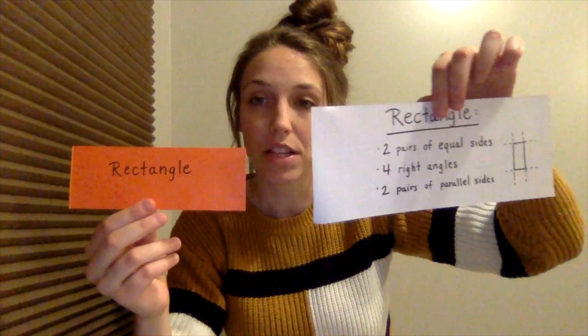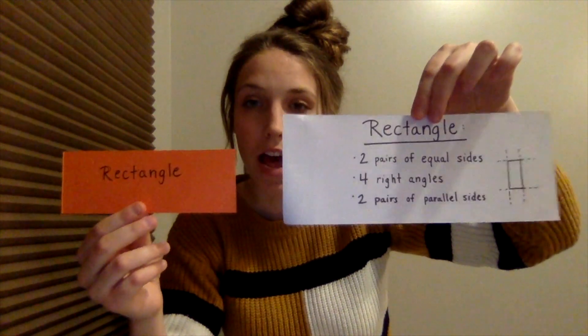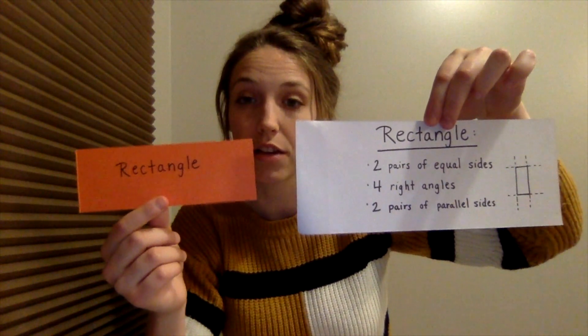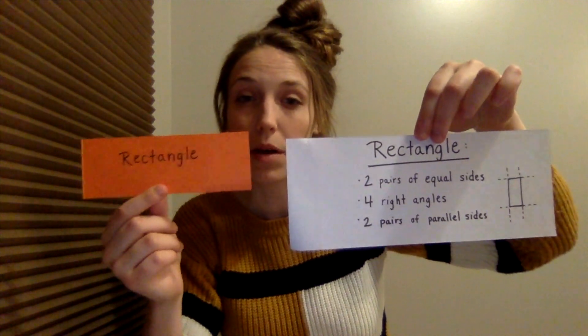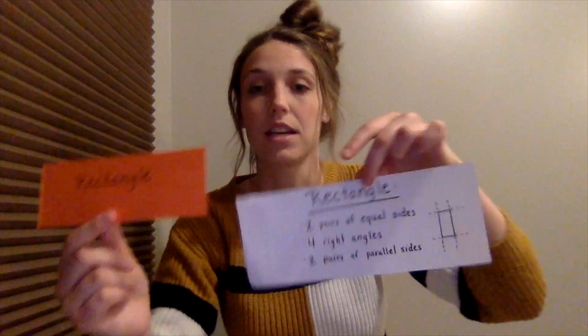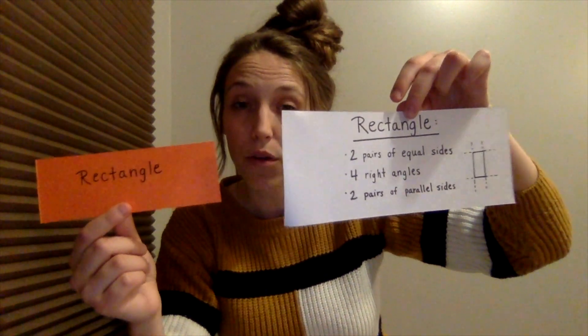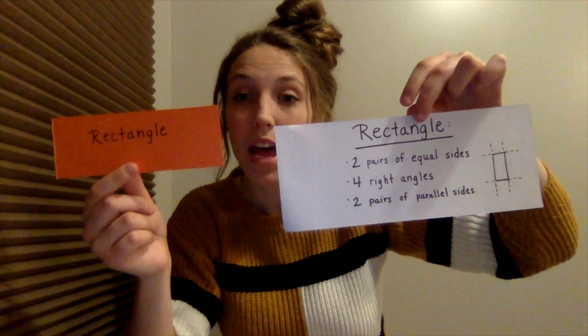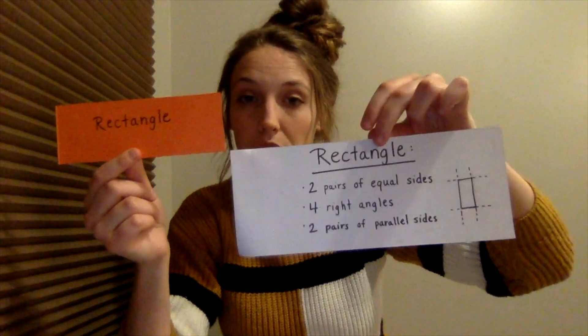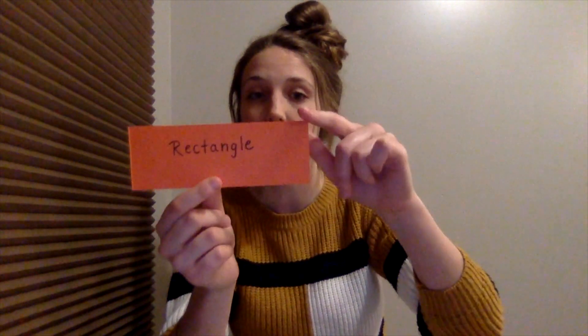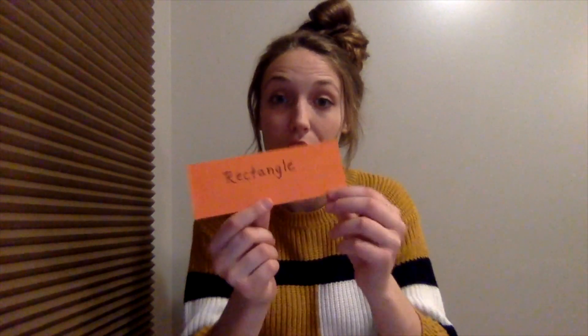Our next one is our rectangle. Some of its attributes are that it has two pairs of equal sides. Not all of its sides are equal, but this side and this side are equal, and then this side and this side are equal. It has four right angles like the square, and it also has two pairs of parallel lines. You can see the right angles in each corner. So that's the rectangle.